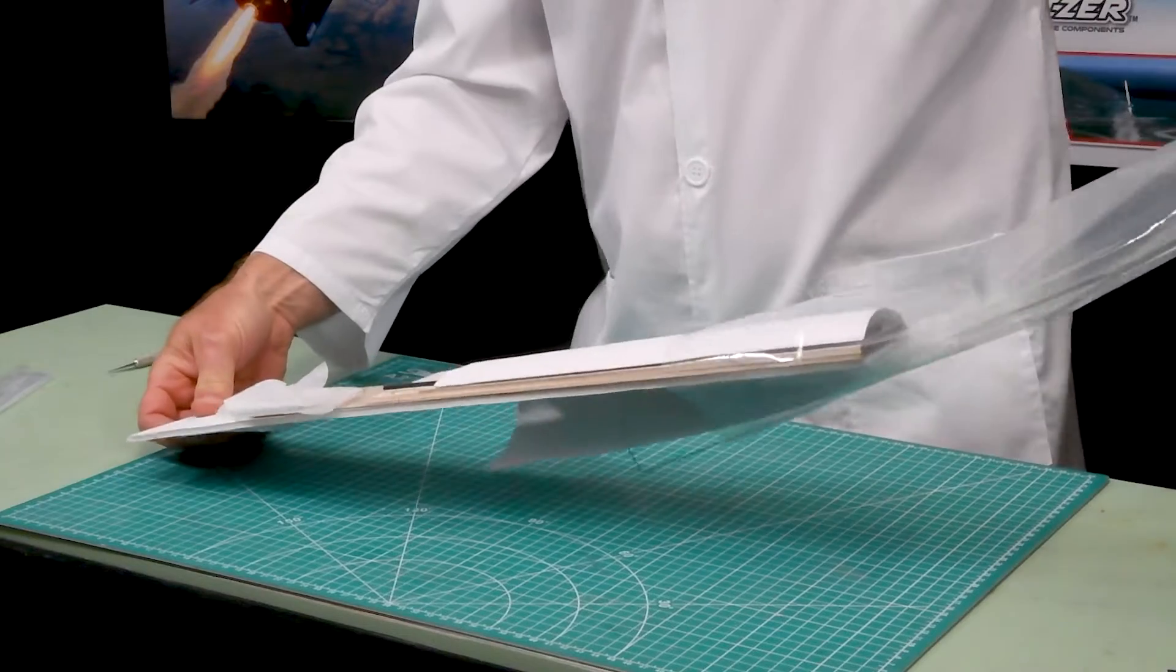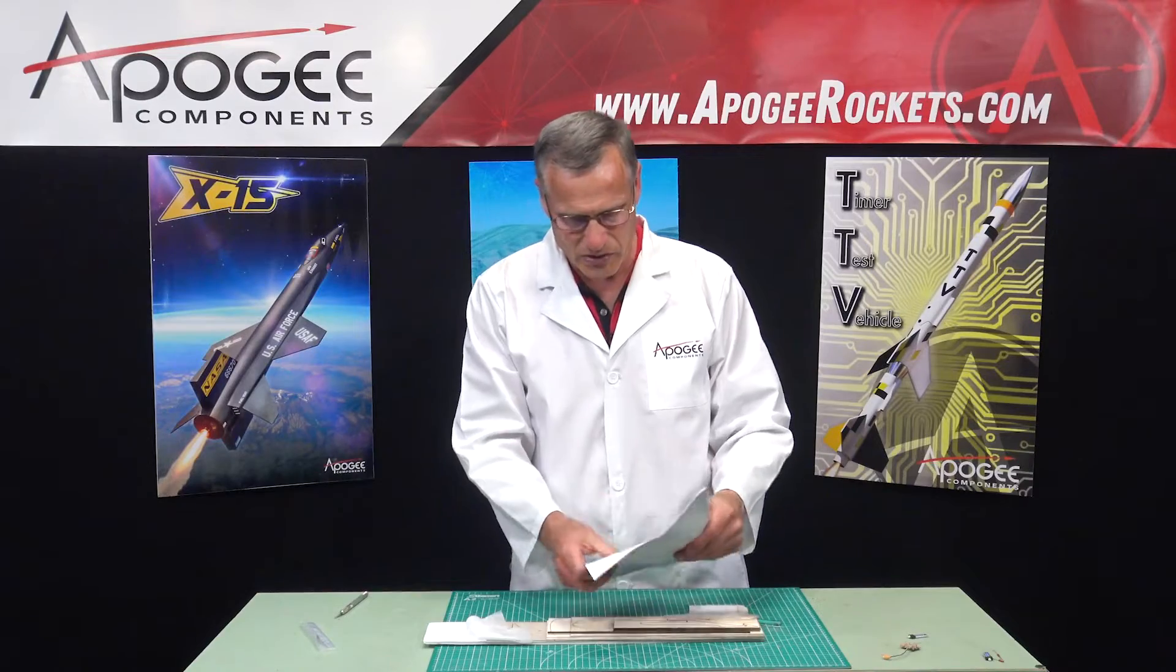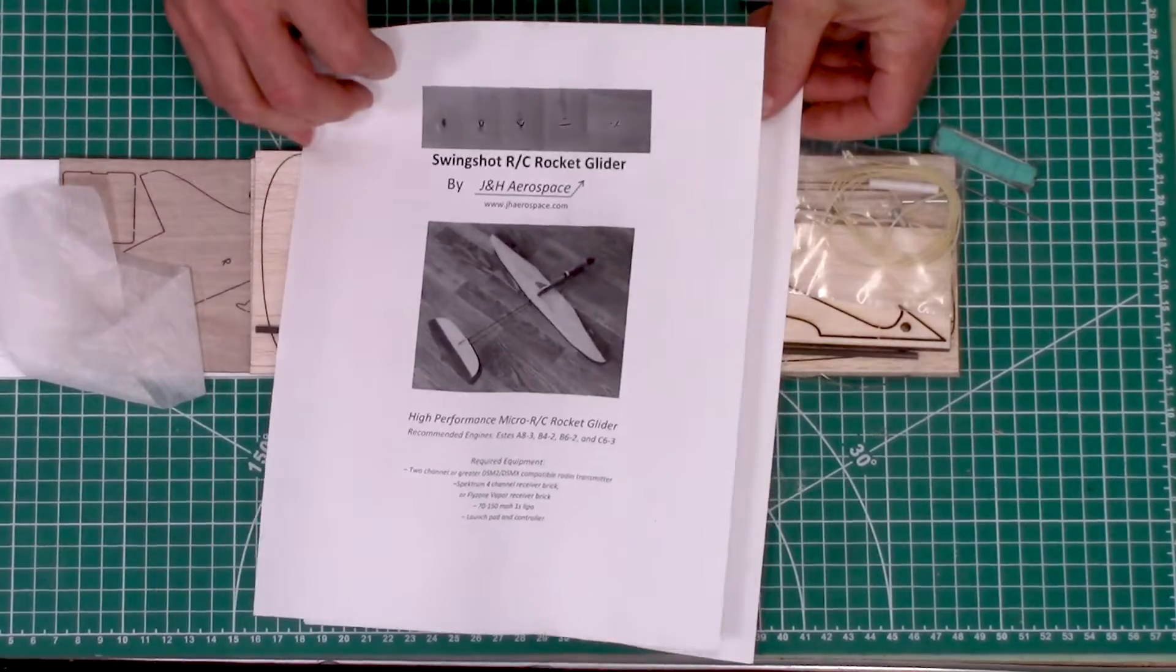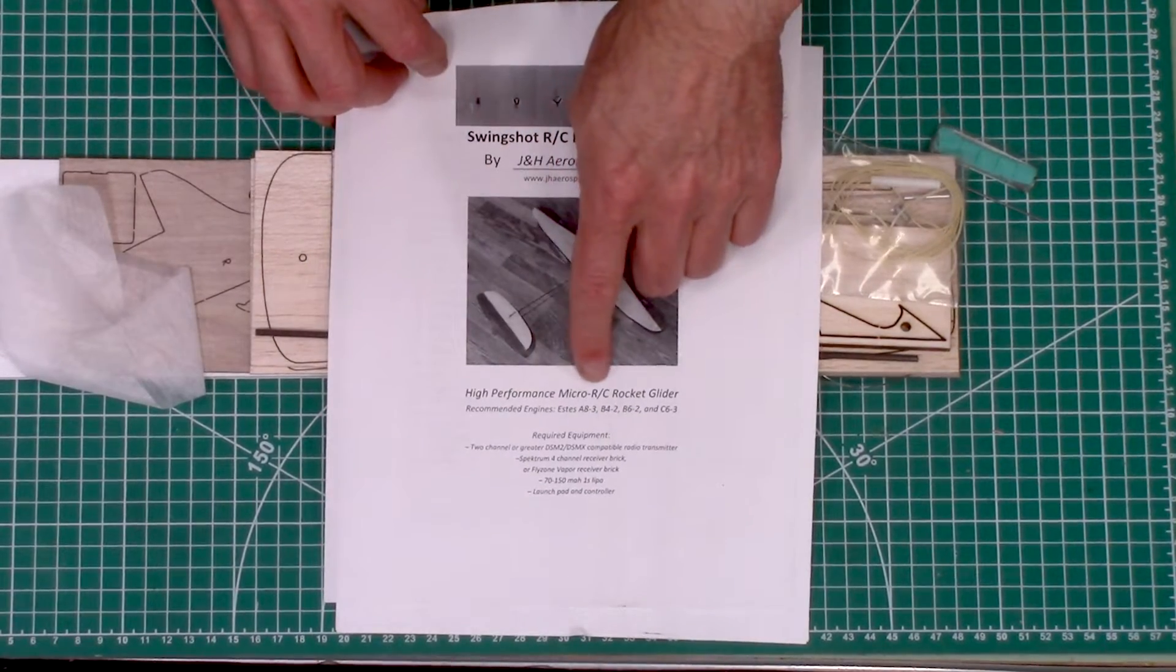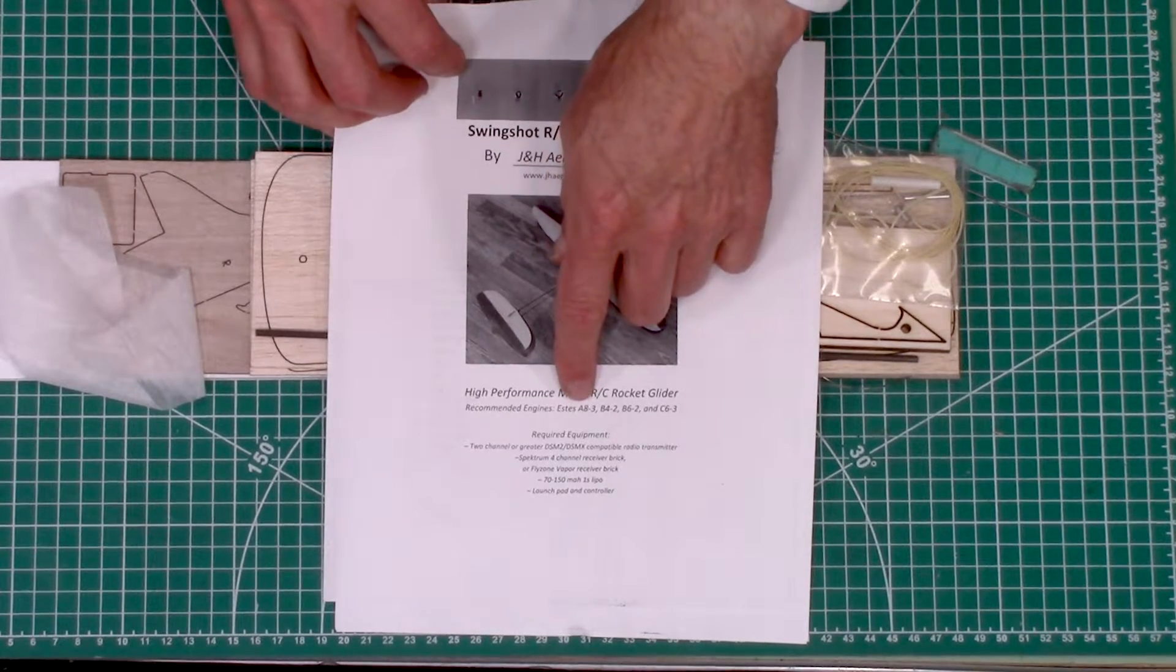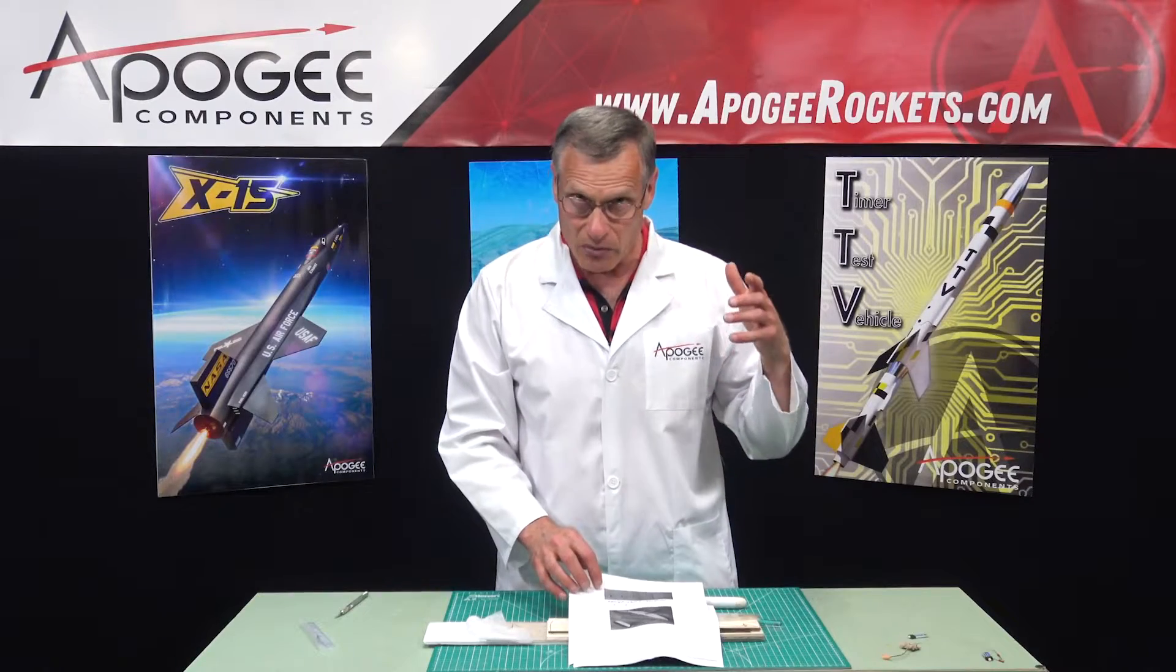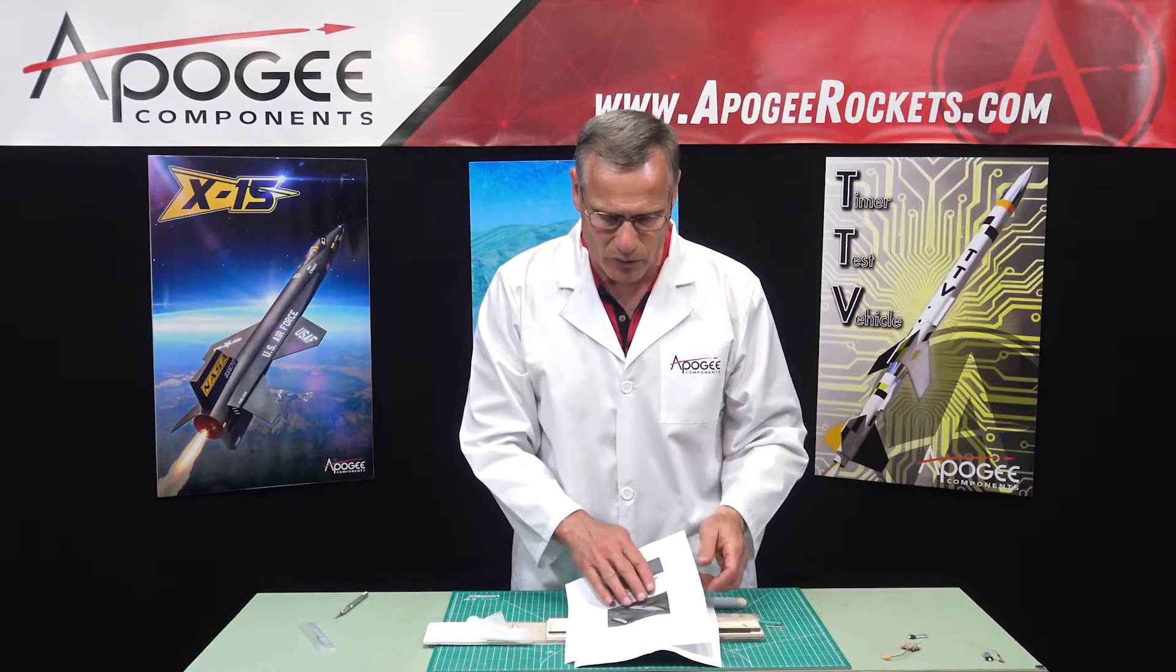So first let's pull out the bag. First we have the instructions. This is a high performance Micro RC Rocket Glider, and it uses 18 millimeter motors: Estes A3, B4-2, B6-2, and the C6-3. You can also use the Quest motors that are comparable.